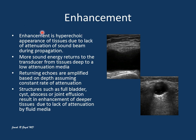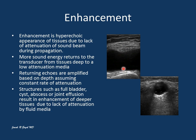Enhancement is another term which is totally opposite to shadow. What happens with enhancement is a hyperechoic appearance of the tissues due to lack of attenuation of the sound beam during propagation. The sound beam goes through a liquid media and does not get attenuated, and you see the structures deep to it which are hyperechoic. Like a torch light, you see this hyperechoic appearance of the structures deep to this low attenuation media. More sound energy returns to the transducer from tissues deep to the low attenuation media, and the returning echoes are amplified based on depth, assuming a constant rate of attenuation. The machine thinks the sound beam came from that depth and has been weakened as it travels, based on the constant rate of attenuation, not knowing that the sound has not been weakened because of the different media.